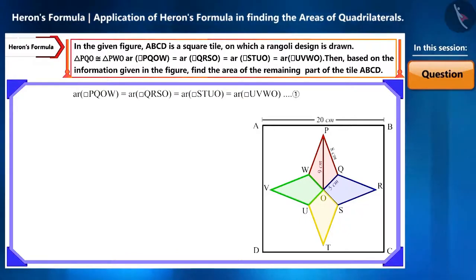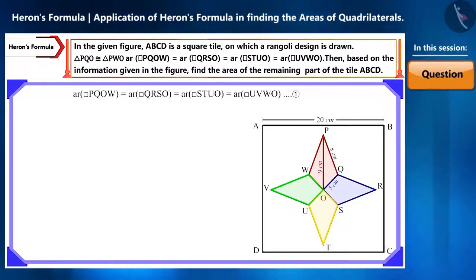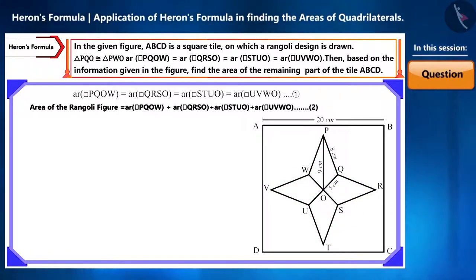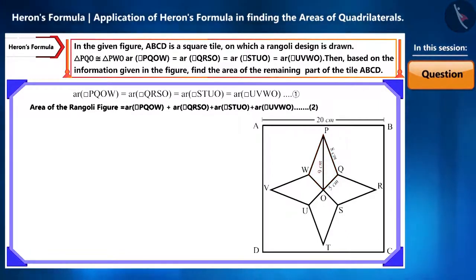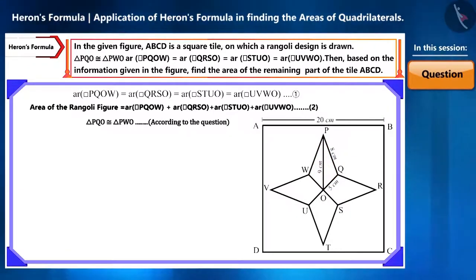Friends, look at the figure carefully. We are given that the area of all four quadrilaterals is equal — let's call this equation 1. The Rangoli figure is formed by joining all four quadrilaterals, so by adding their areas we get the area of the Rangoli — equation 2. Now look at quadrilateral PQOW carefully. It contains two triangles: triangle PQO and triangle PWO, which are congruent according to the question.